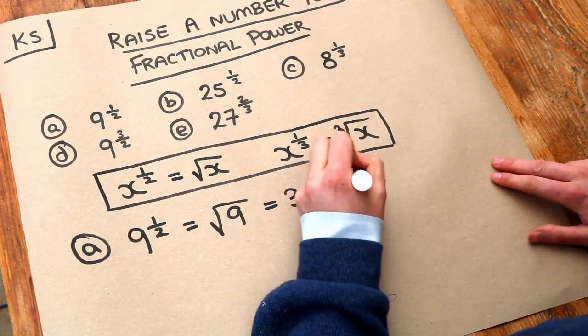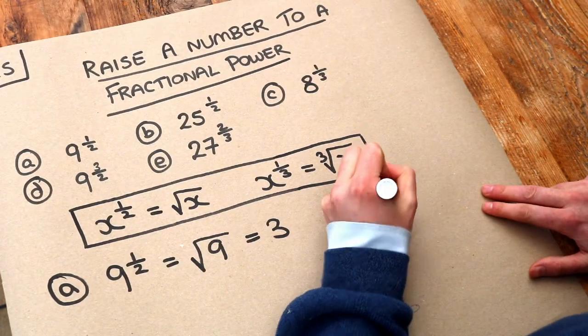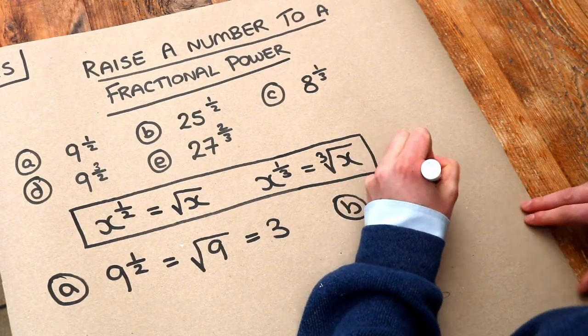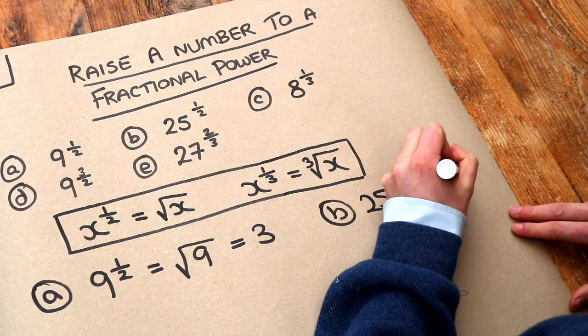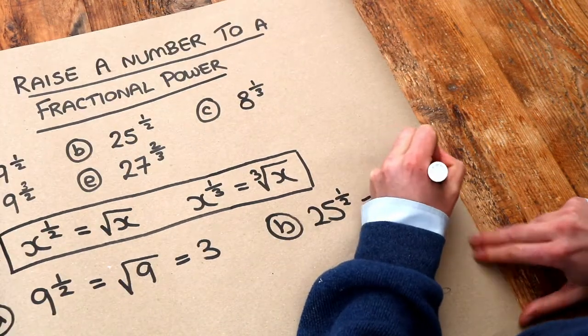What about b? 25 to the half. Well, again, a power of half just means you square root it, and the square root of 25 is 5.